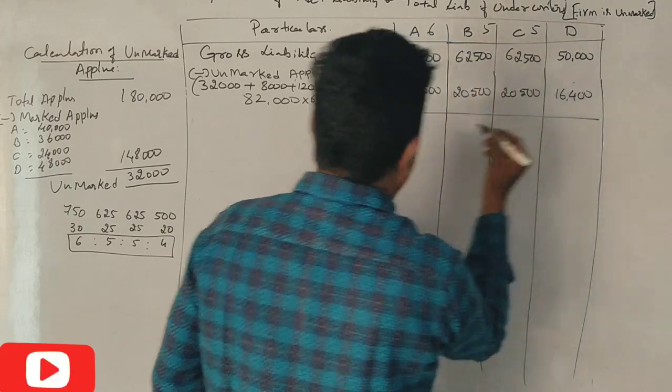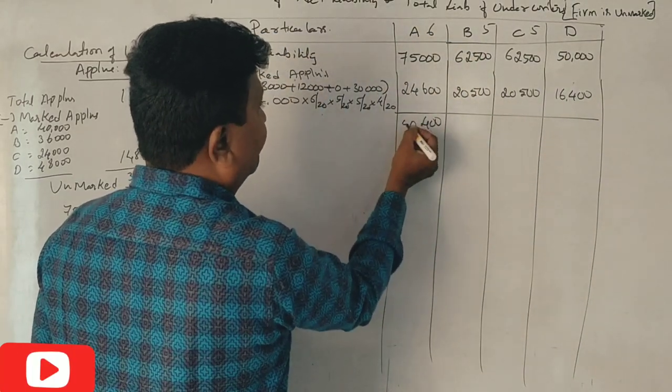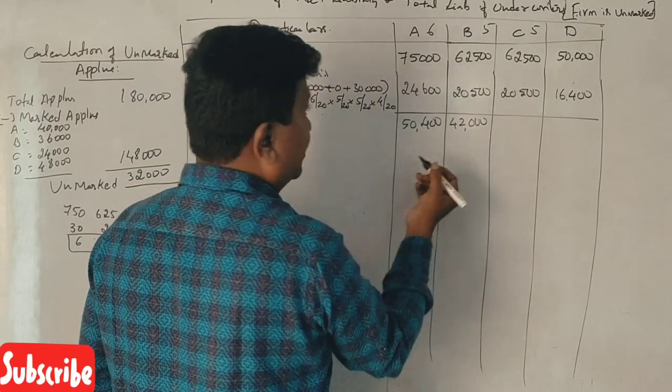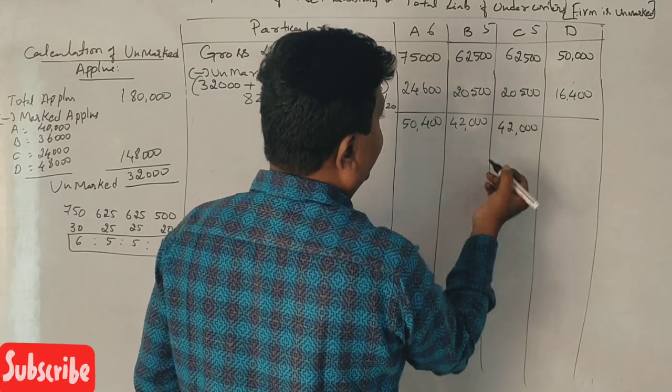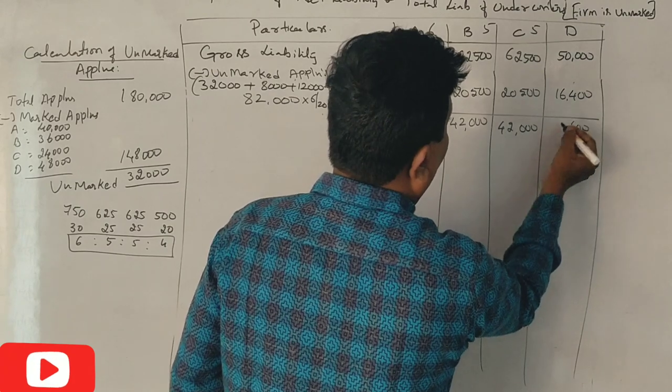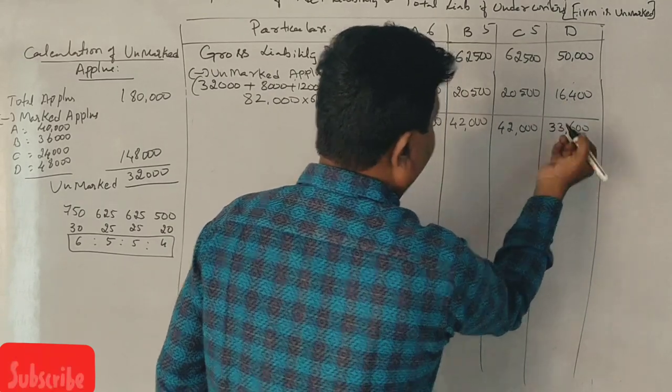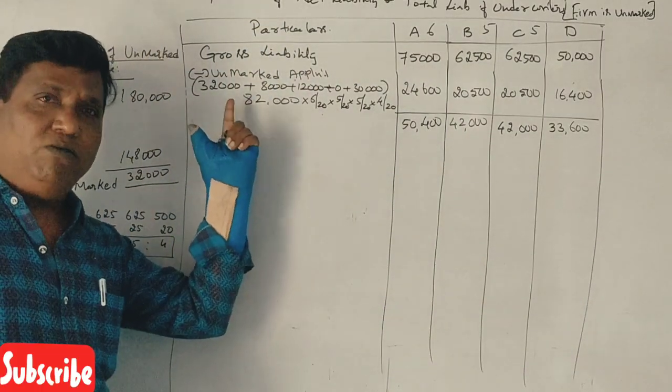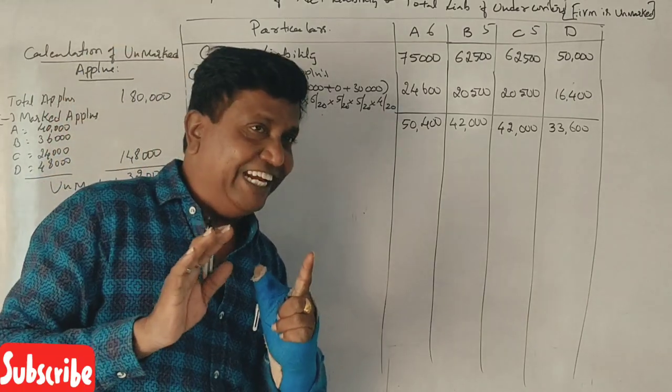It is minus 50,400. 50,400. It is 42,000. 42,000, 19. Four on 19. Here marked and unmarked and firm. 2 minus 1. Correct? Where is it?